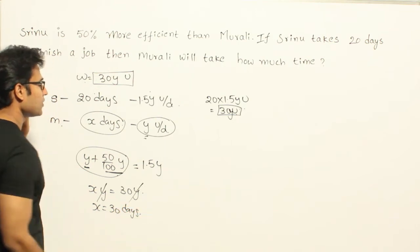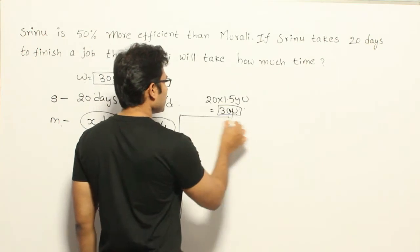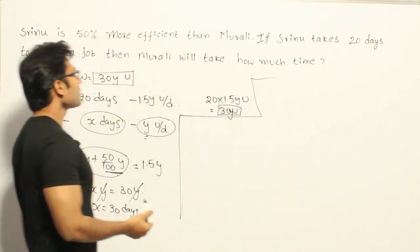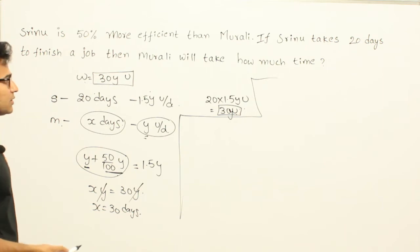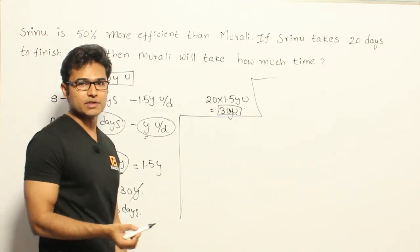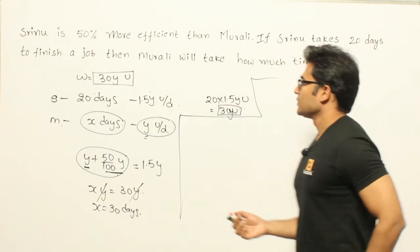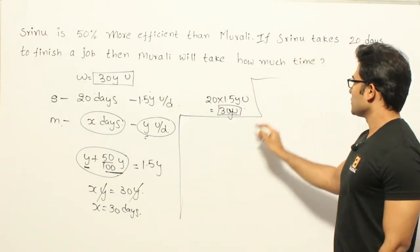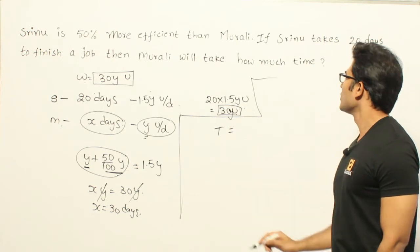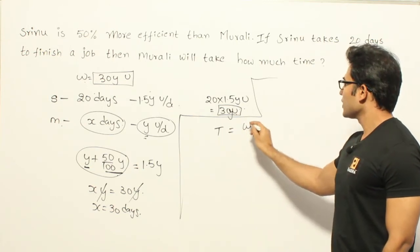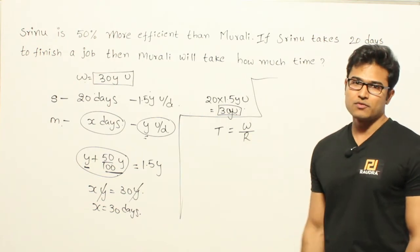So this is one way of solving it, and there are various other ways of solving it. Now, what is the relation between time taken and efficiency? Efficiency is nothing but the speed. The time taken to finish a project will be equal to total work divided by the rate at which he is doing the work.